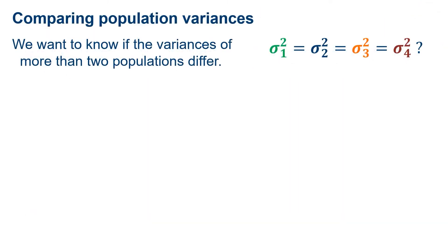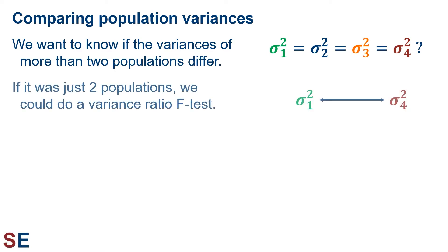Consider the following scenario: we want to know if the variances of more than two populations differ. For this example, we're looking at four populations. If this was just two populations, we could do a variance ratio F-test. If you're unfamiliar with this, I suggest taking a look at our F-test video on this channel. That test calculates a test statistic by taking the larger sample variance and dividing it by the smaller sample variance.